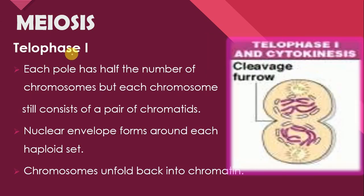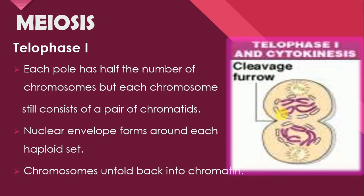Next is Telophase 1. Each pole has half the number of chromosomes, but each chromosome still consists of a pair of chromatids. As a result of the pulling force of kinetochore in anaphase, dono poles pe half number of chromosomes present hote hain, but still chromosomes ke paas pair of chromatids present hote hain. Nuclear envelope forms around each haploid set and chromosomes unfold back into chromatin.